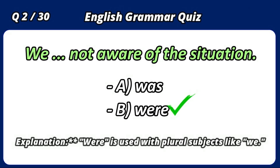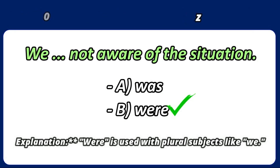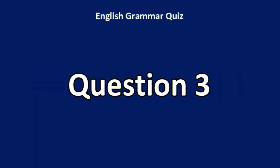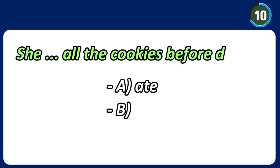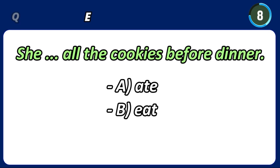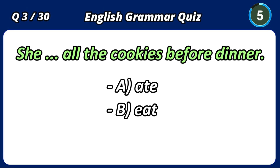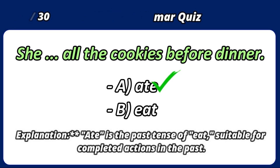Were is used with plural subjects like we. Went is the past tense of go, suitable for completed actions in the past.